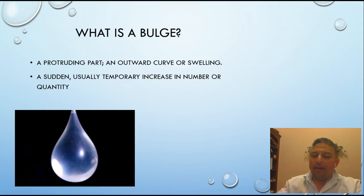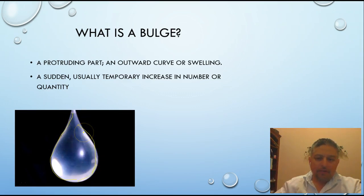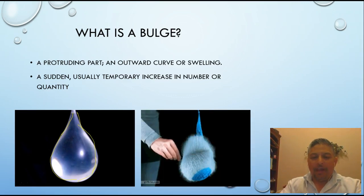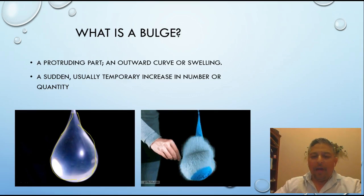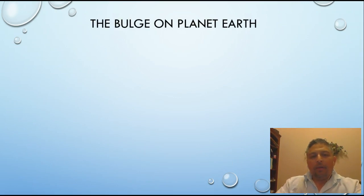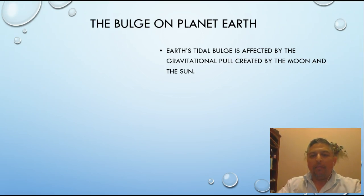Here is an example of what a bulge will look like. Notice that you have a huge curve on the bottom, but it also has a little stretch on the top. What does this have to do with our tides? Well, this next picture shows that Earth's tidal bulge is affected by the gravitational pull created by the moon and the sun.